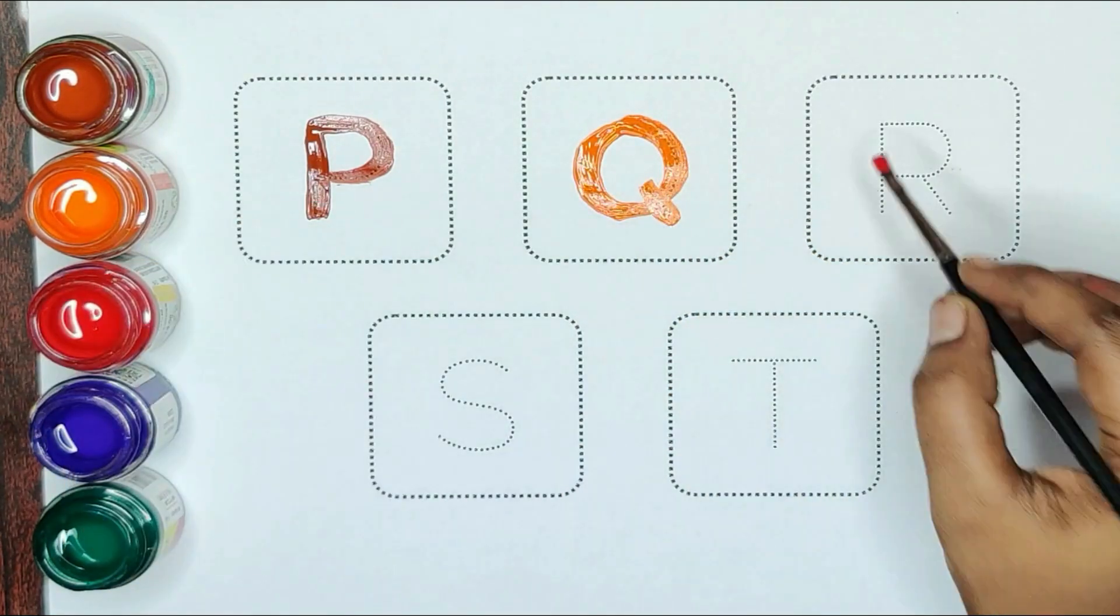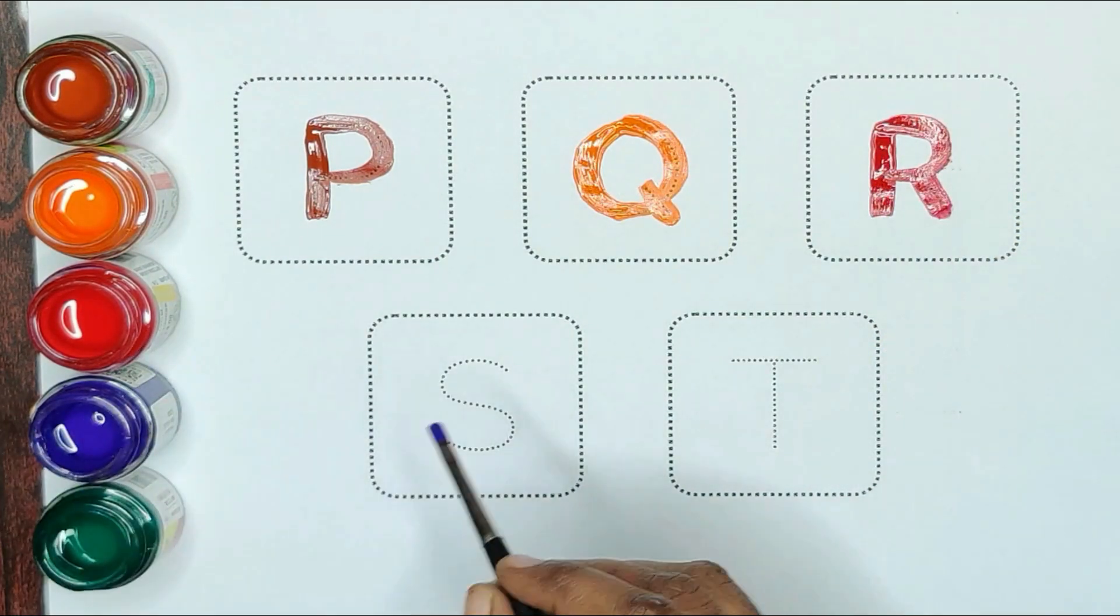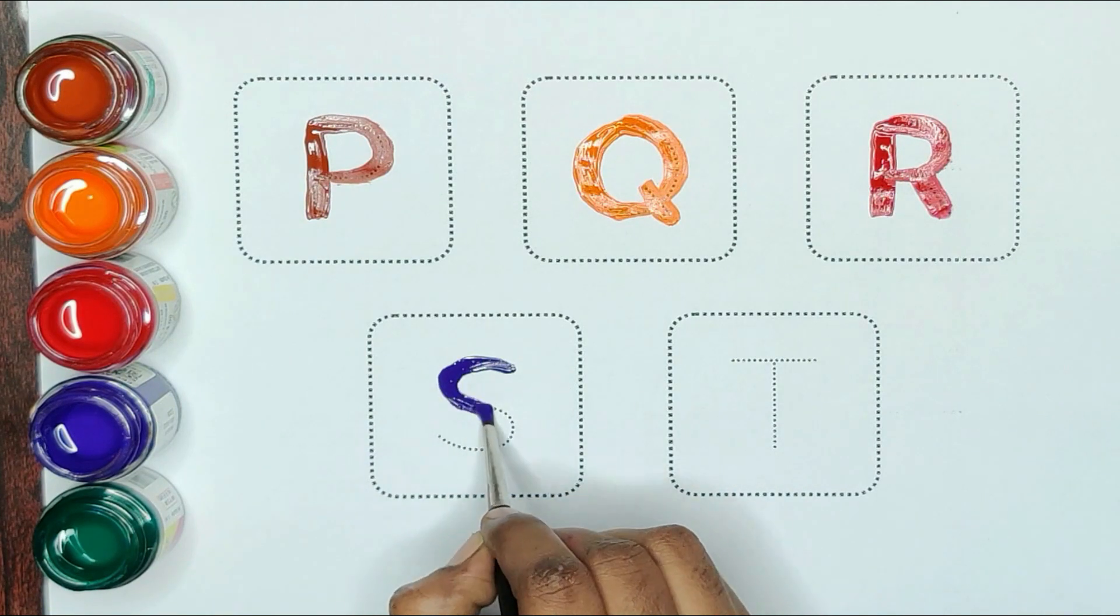Red color, R. R for rose. Blue color, S. S for sun.